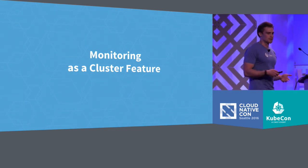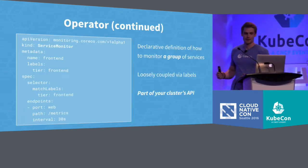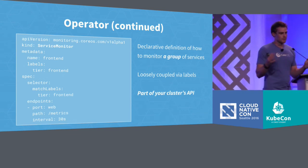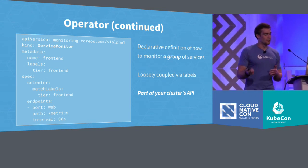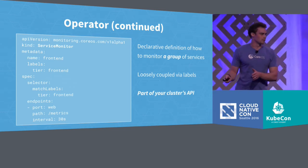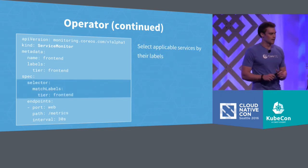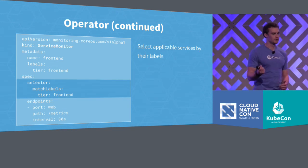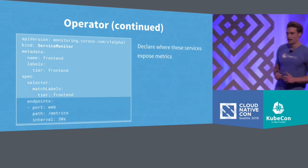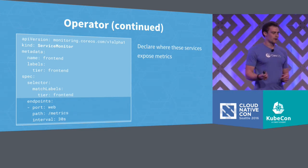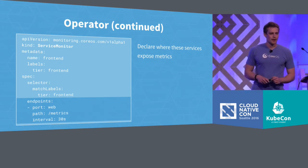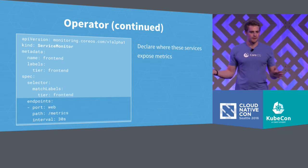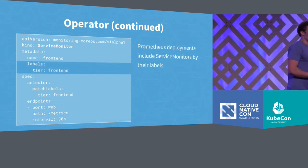We need a way to configure how custom services can be monitored. For that, the operator introduces another third-party resource which we call a ServiceMonitor. The ServiceMonitor declares for a group of services how they can be monitored in a common way. This is actually pretty straightforward because we can use Kubernetes idioms to express how we want monitoring to happen. First, we select which services this ServiceMonitor should apply to using label selectors — nothing new if you're familiar with basic Kubernetes concepts. We then simply specify that for all these services, we can monitor them on the named port called 'web' on the /metrics endpoint, and we want to scrape these metrics every 30 seconds. This is just a declarative definition of how monitoring should happen — it doesn't do anything by itself.